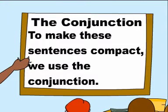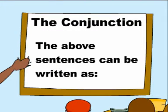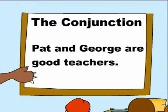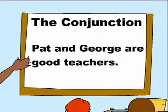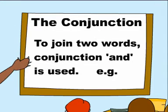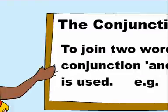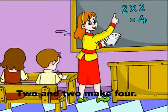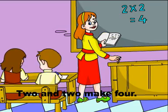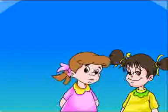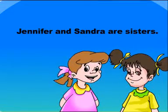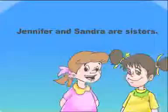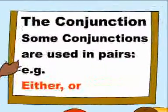To make these sentences compact, we use a conjunction. The above sentences can be written as: Pat and George are good teachers. The conjunction 'and' is used to join two words. For example: Jennifer and Sandra are sisters. Some conjunctions are used in pairs.